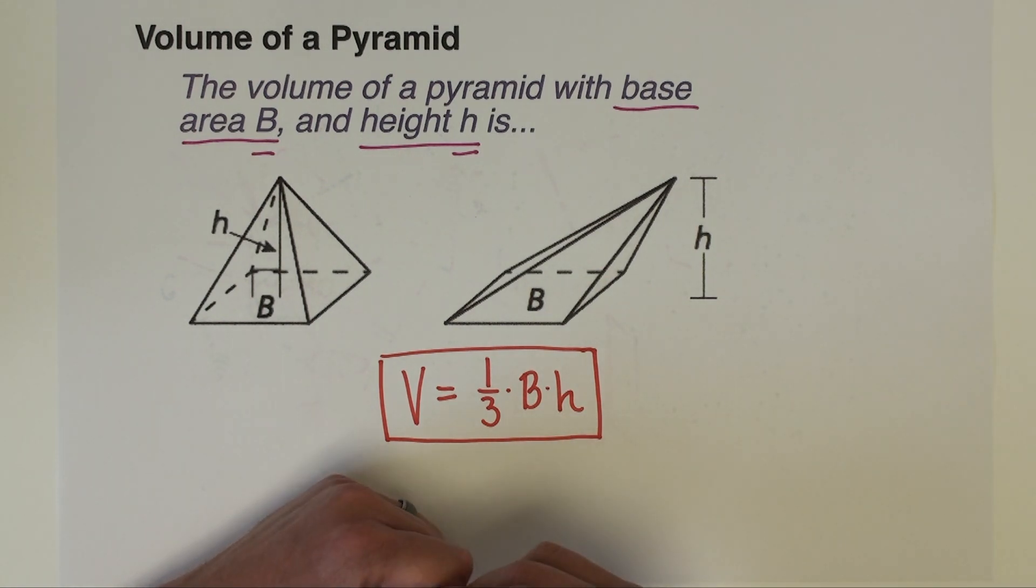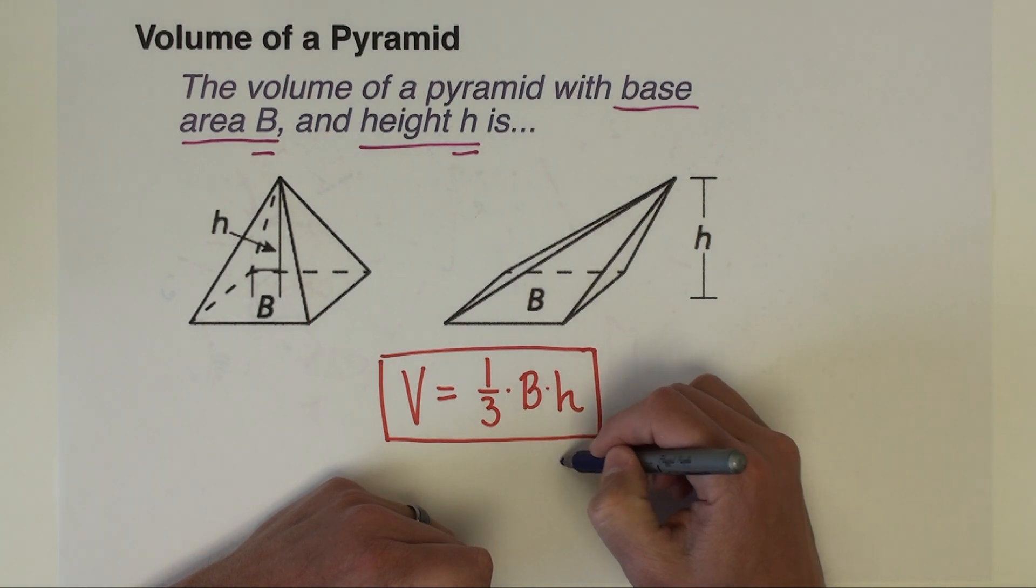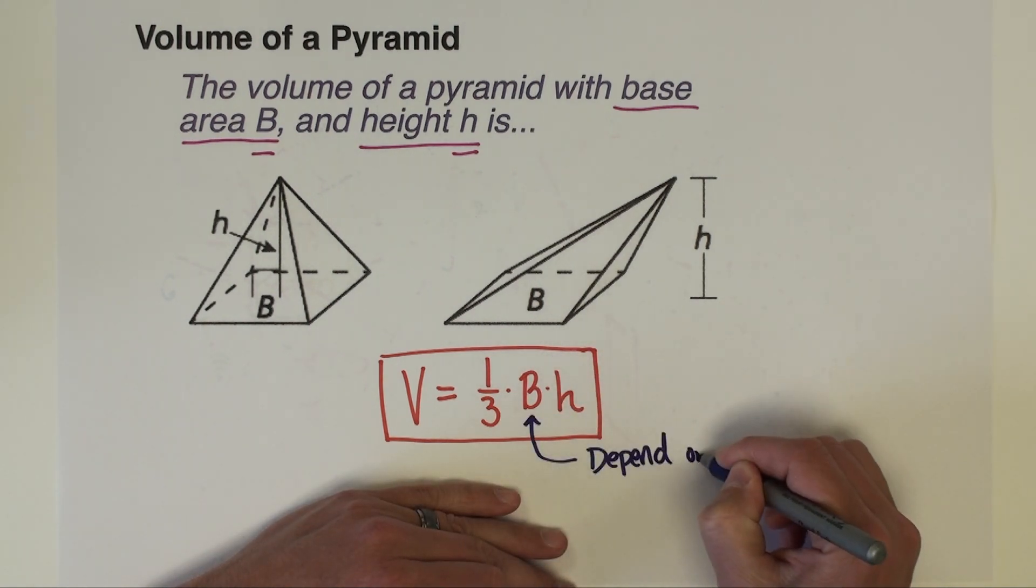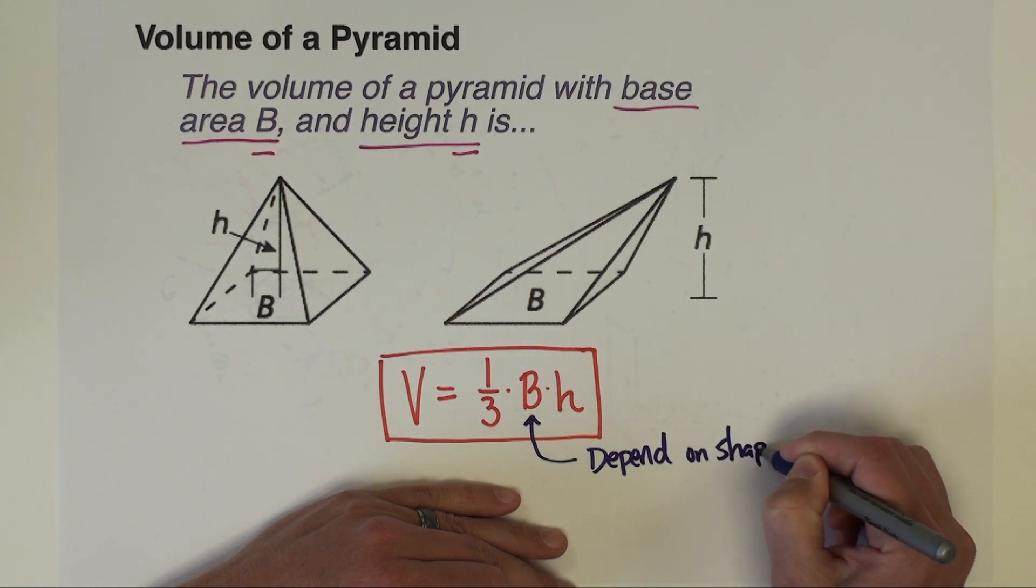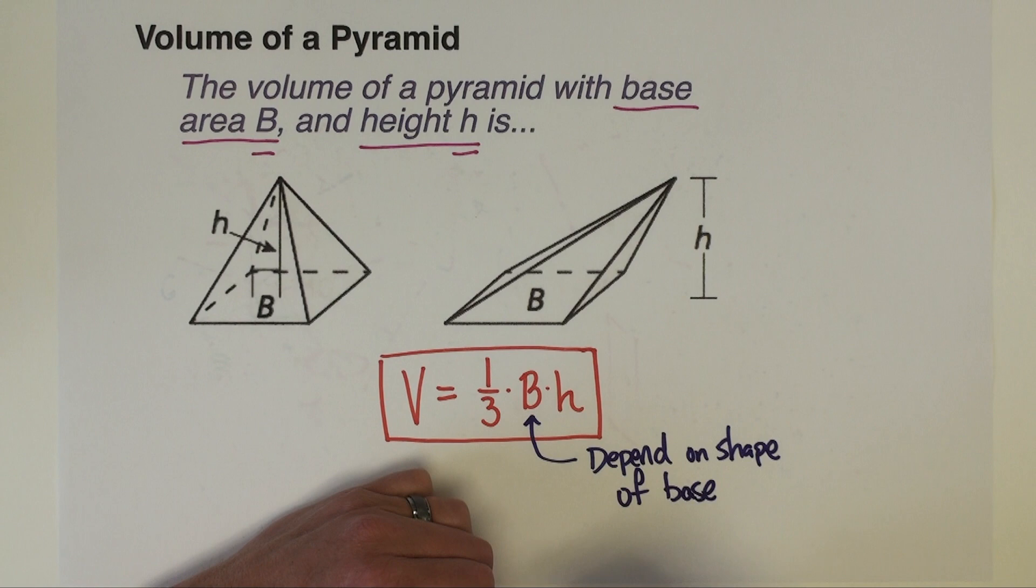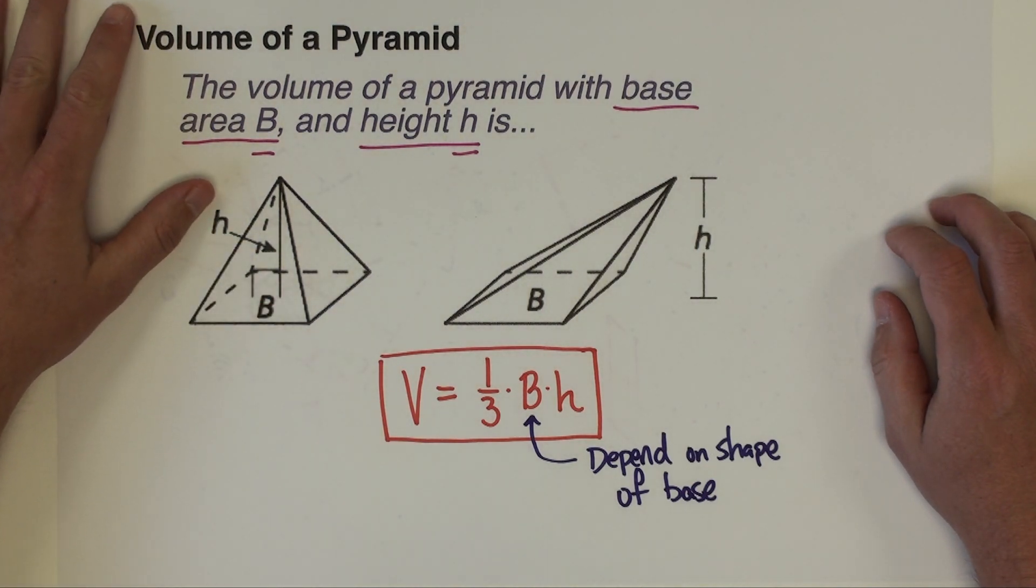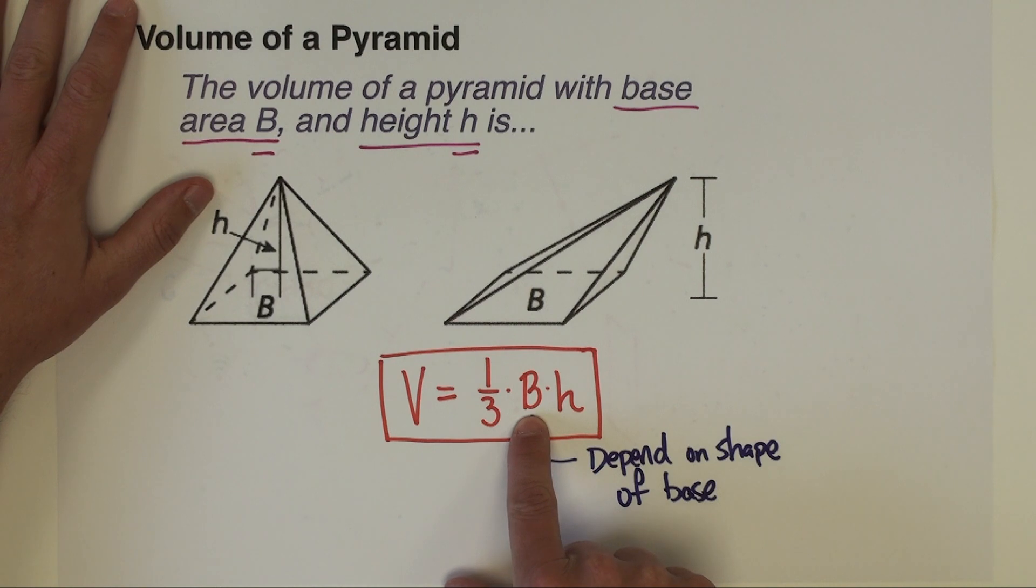Again, like we saw with the prisms, the B which stands for the area of the base does depend on the shape of the base. So the shape of the base can be a square, rectangle, triangle, trapezoid, all sorts of different kinds of bases, and you'll use whatever formula you need based on the shape of that base.